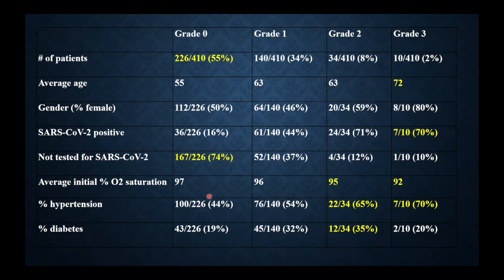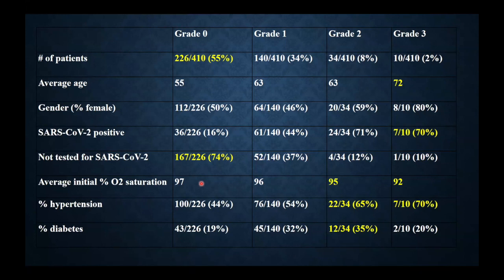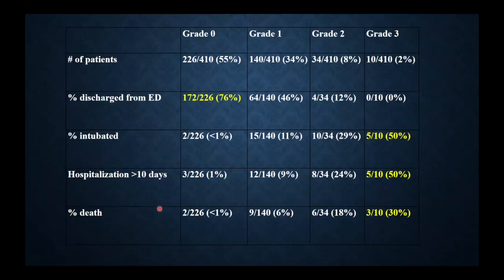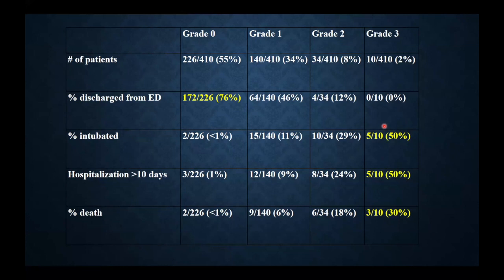It makes sense that as the amount of consolidation on the X-ray increased, oxygen saturation decreased. You might ask why we'd do a chest X-ray when we could use oxygen saturation — but the chest X-ray is actually more sensitive; people will have an oxygen saturation of 100 and still have findings on their chest X-ray. Patients with a grade of zero were mostly discharged from the emergency room. In contrast, those with a grade of three were not discharged — a large percentage were intubated, had long hospitalizations, and increased likelihood of death.